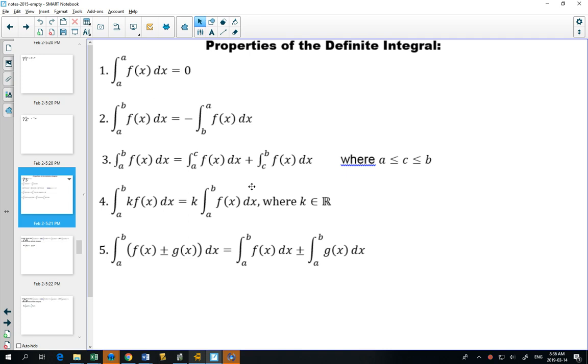If the definite integral is the area under the curve, and you do the definite integral from one value to the same value, in other words, we're just basically looking at a straight line going up. Does that line have any area? No. So the first property says that should be 0, and I hope that makes sense.